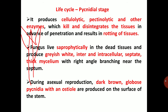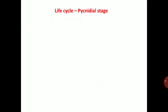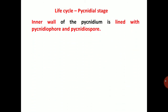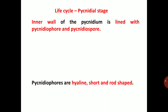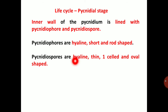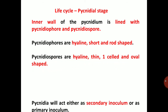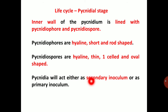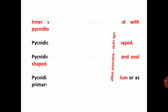During asexual reproduction, dark brown globose pycnidia with an ostiole are produced on the surface of the stem. The inner wall of the pycnidium is lined with pycnidiophores. Pycnidiophores are hyaline, short, and rod-shaped, and produce hyaline, thin, one-celled, oval-shaped pycnidiospores. Pycnidia act either as secondary inoculum or as primary inoculum, but mostly as secondary inoculum.